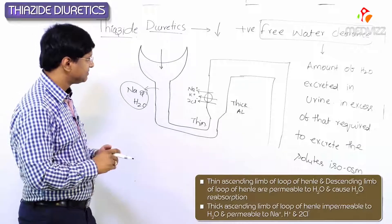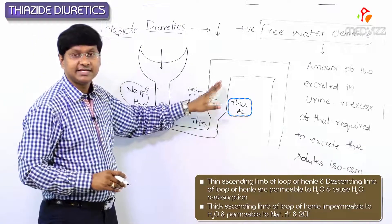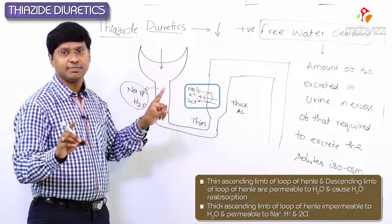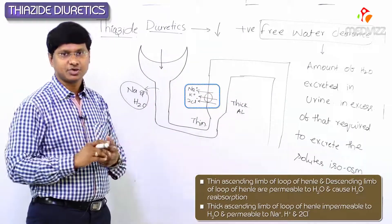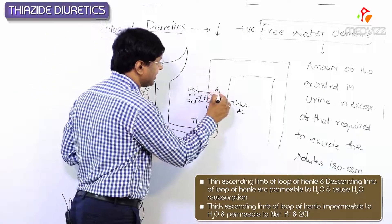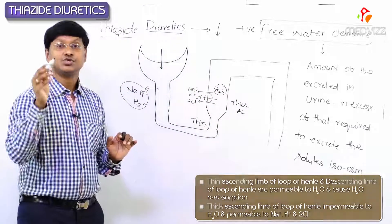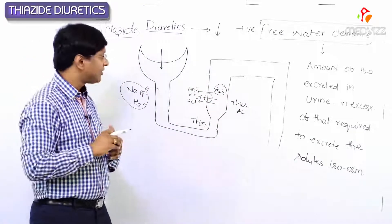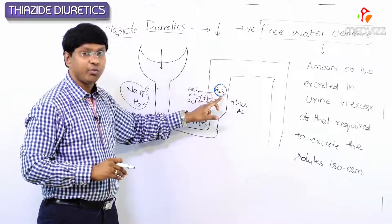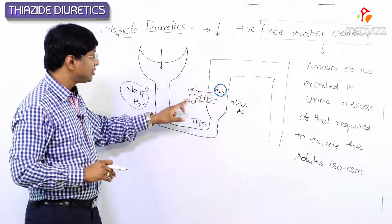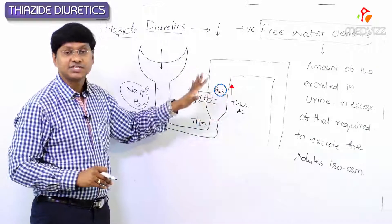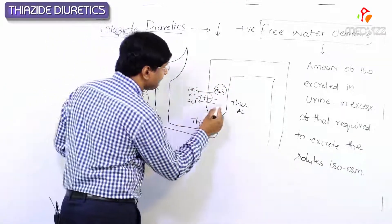At the level of the thick ascending limb of the loop of Henle, only solutes are absorbed but water is not reabsorbed. Therefore, the quantity of water compared to solutes is increased, and this is called positive free water clearance.